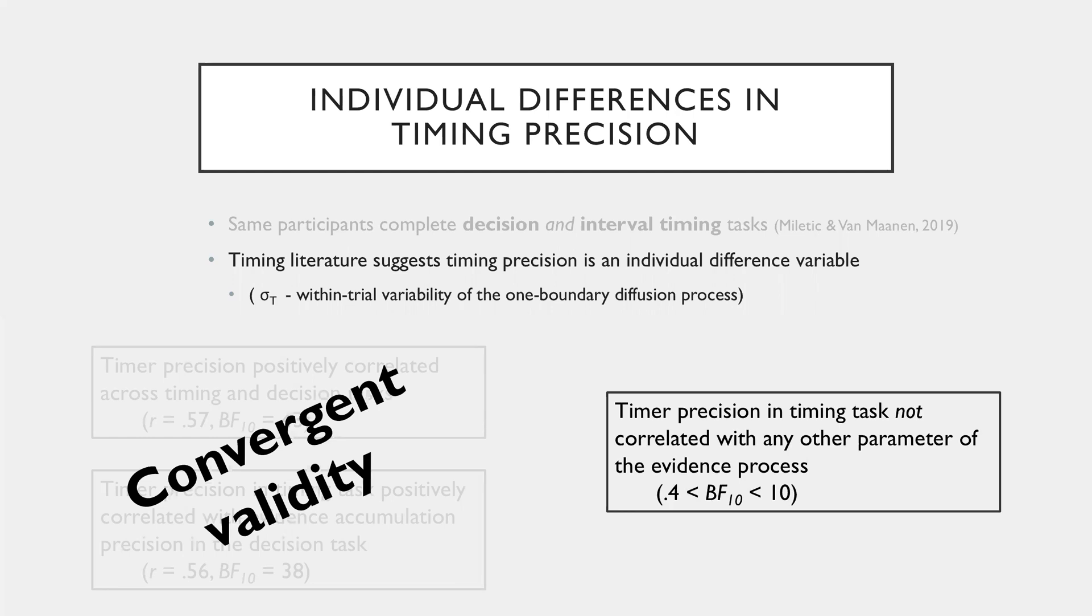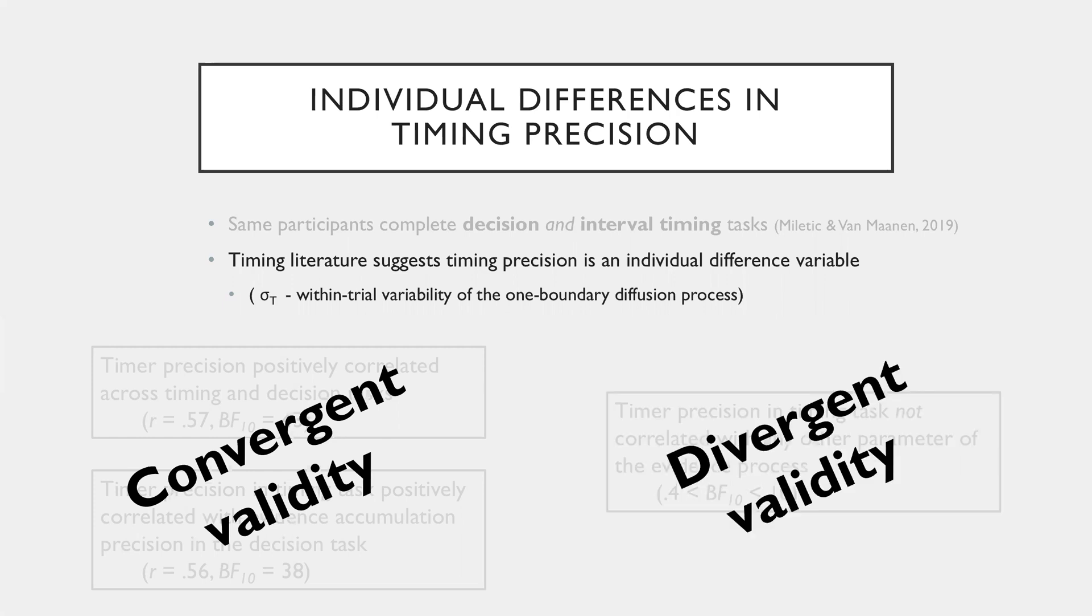But importantly, there's not just a correlation among everything. Because the timing precision in the timing task was not correlated with any other parameter of the evidence process. We take this as evidence for divergent validity.